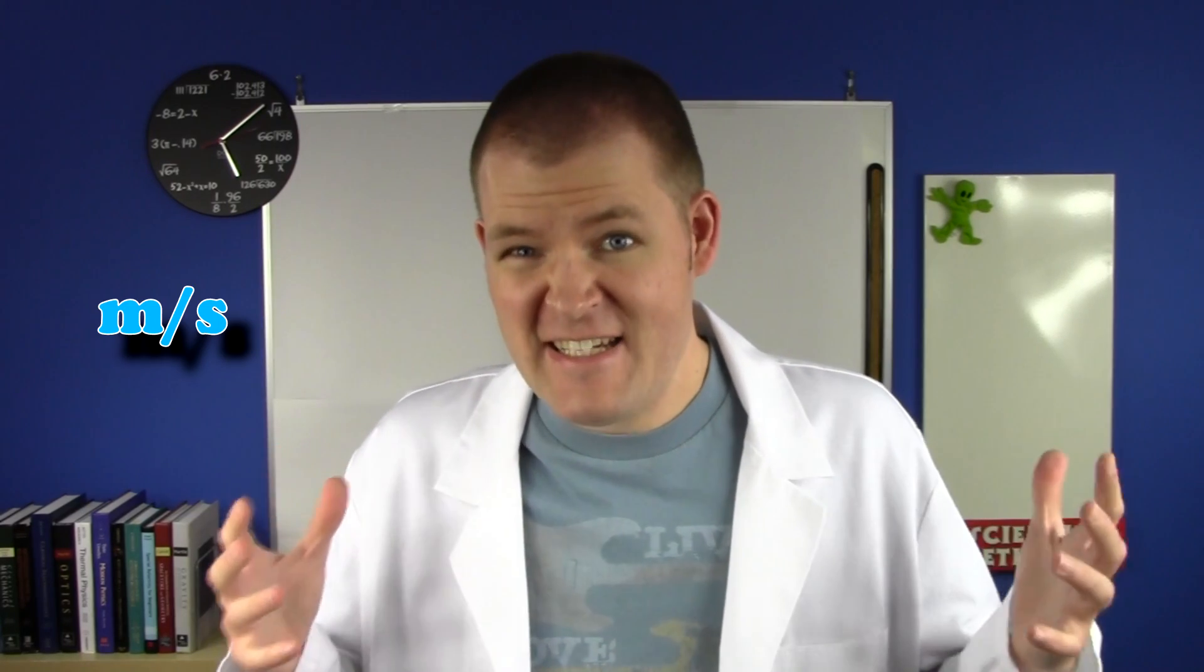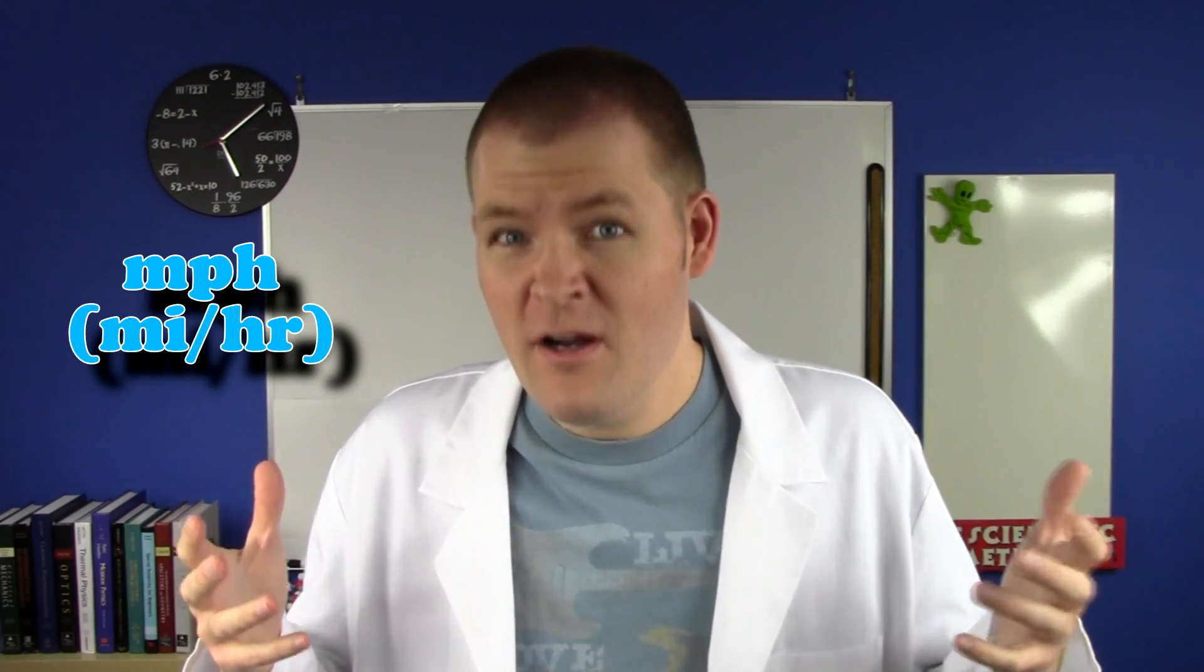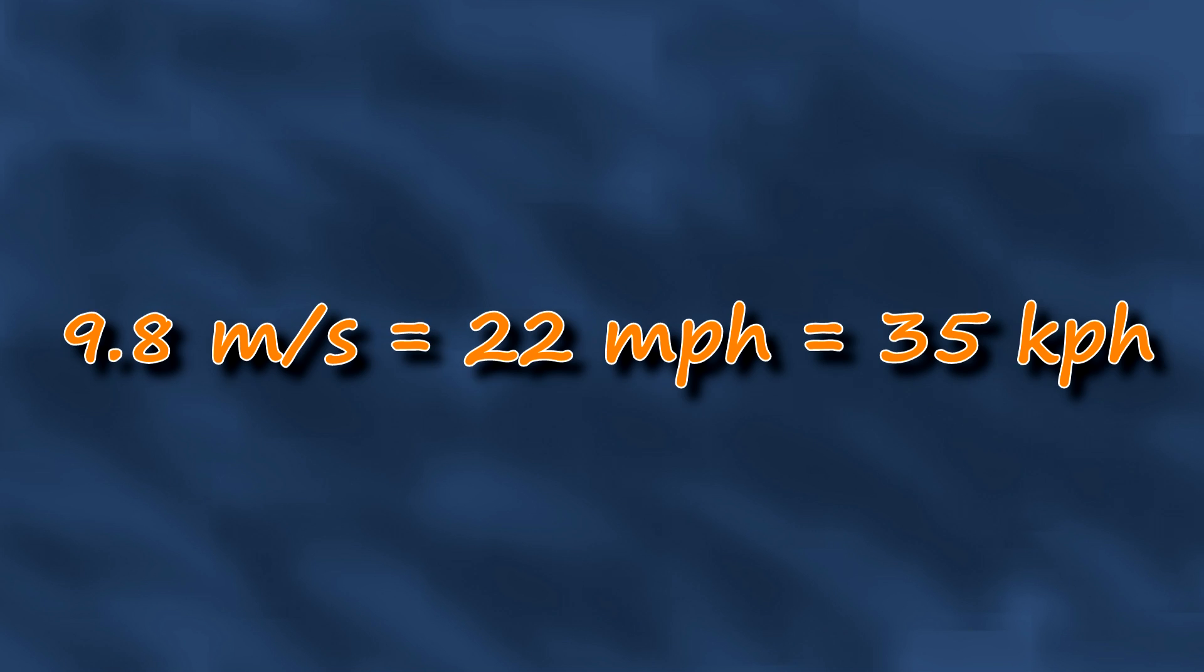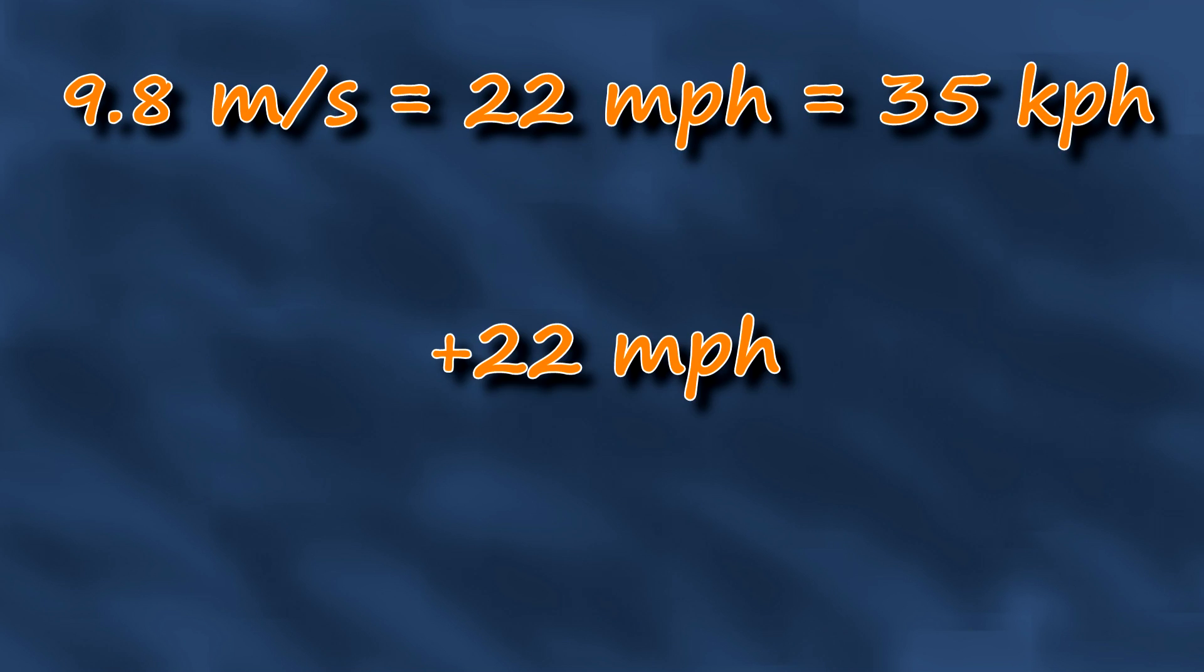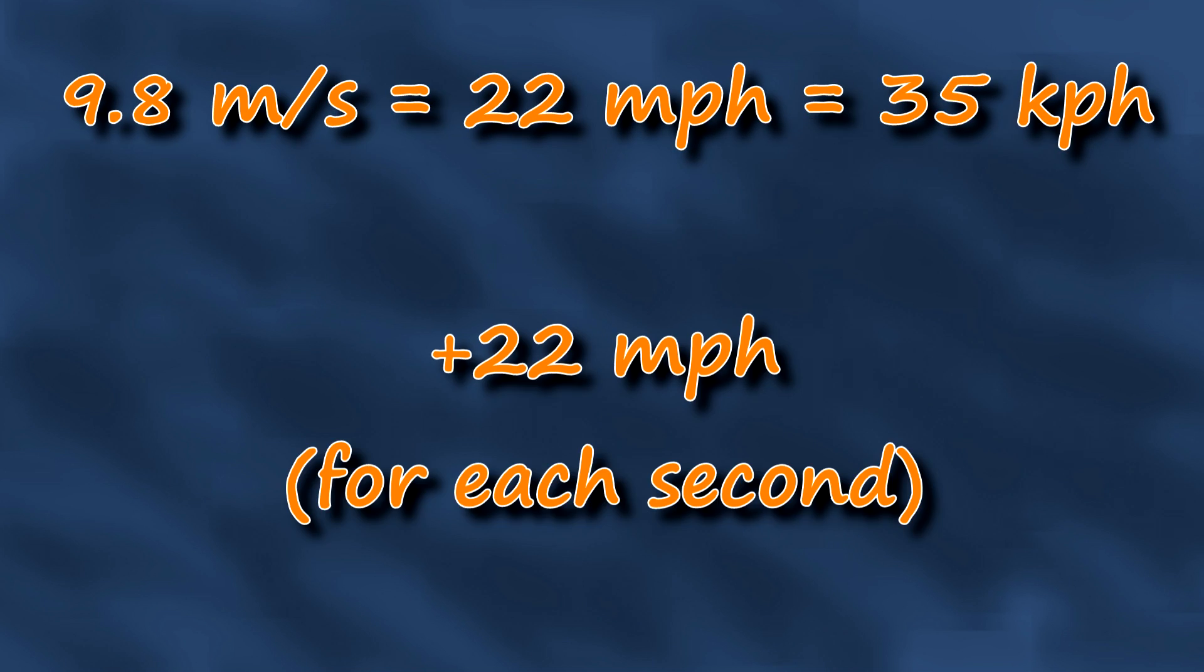Now meters per second is great for scientists, but you probably don't have an instinct for it. Depending on where you live, you need either miles per hour or kilometers per hour. 9.8 meters per second is about 22 miles per hour, or 35 kilometers per hour. So what this means is you gain 22 miles per hour for every second that you fall.